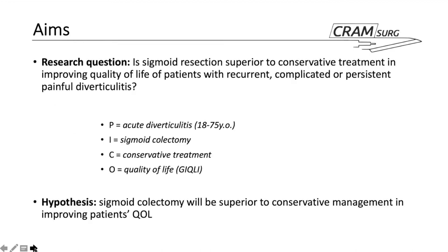The cohort was mostly similar with the same variables. The research question asked: is sigmoid resection superior to conservative treatment in improving quality of life of patients with recurrent, complicated, or persistent painful diverticulitis? Using the PICO model: population was patients with recurrent, complicated, or persistent painful diverticulitis; intervention was sigmoid colectomy; comparison was conservative treatment involving written information, dietary advice, and prescribed fibre supplement; and the primary outcome was the difference in gastrointestinal quality of life index between randomisation and six months.